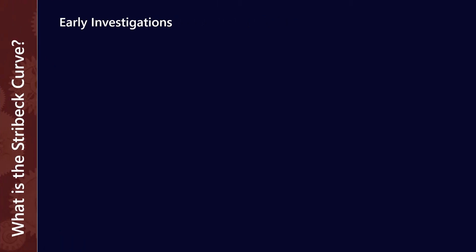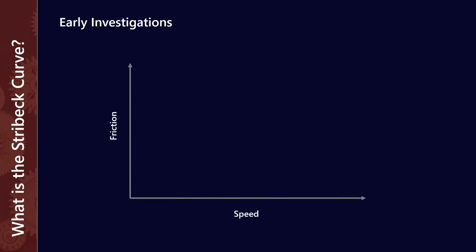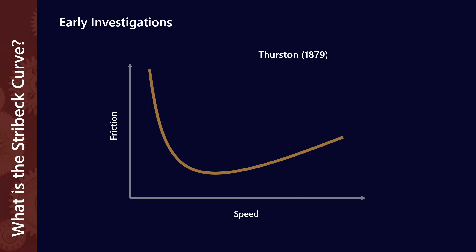The Stribeck curve has its origins in the late 1800s. There were some early investigations done to look at the relationship between friction and speed in a journal bearing. A guy called Thurston found that there was a minimum at some point in that relationship. Although the analytical and measurement tools at the time were not particularly accurate, he was able to determine there was a minimum point. That was then taken a little bit further by Stribeck, who we named the curve after.